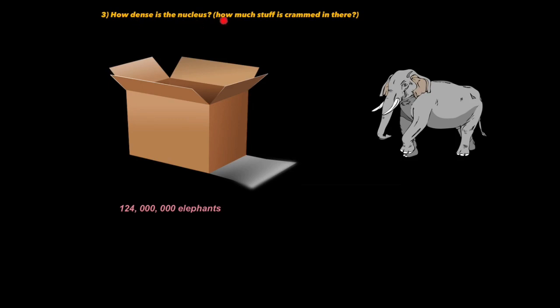The final mind-blowing fact is how dense is the nucleus? That's a scientist's way of saying how much stuff is crammed in there. So, imagine I had a box and the box was about the size of a toaster box, about one foot by one foot by one foot. Now, imagine this box represented an empty nucleus and my job was to cram this box with elephants.